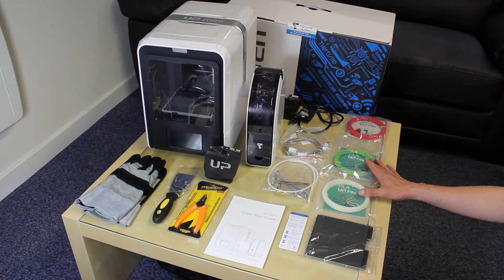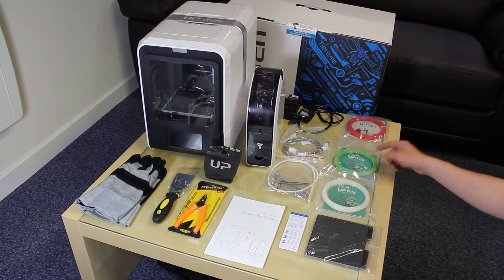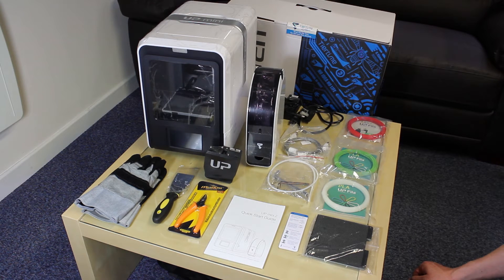You get two samples of PLA filament. In this box it was white and green. And you get an ABS plus sample as well which came in red.